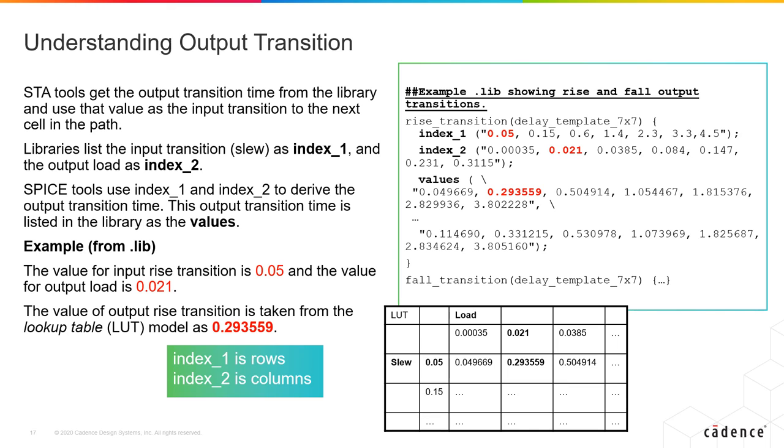Based on the example for an input transition of 0.05, the value of the output load is 0.021. Based on the lookup table, the value is shown to be 0.293559.